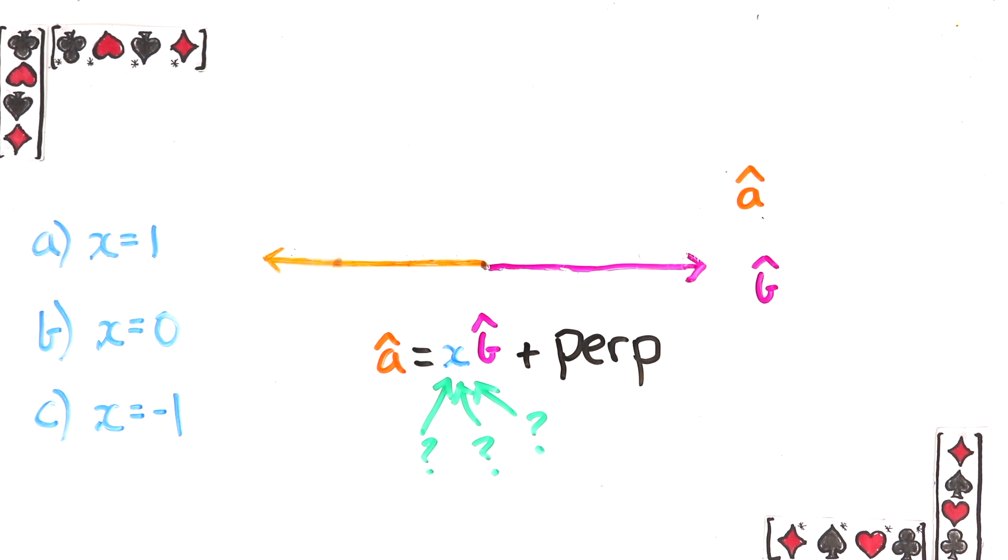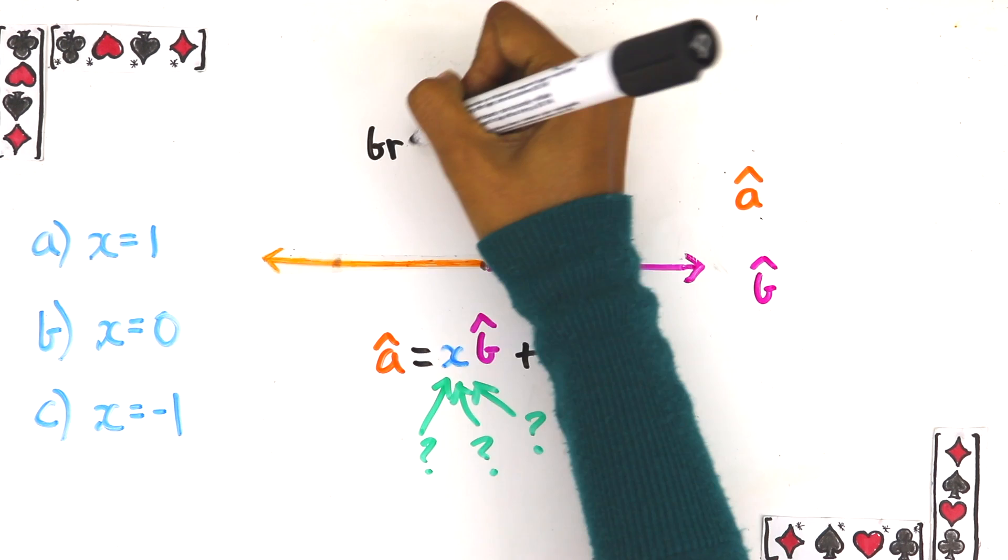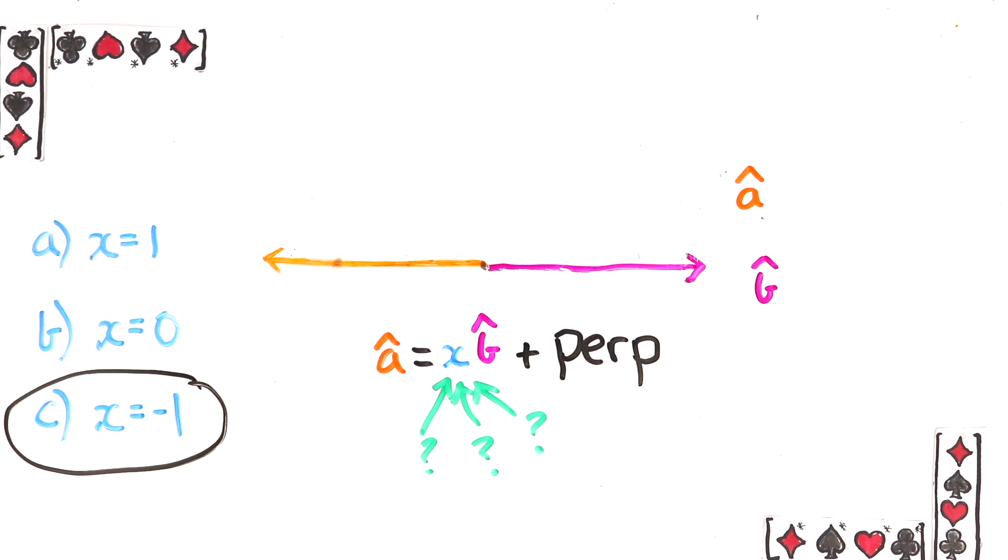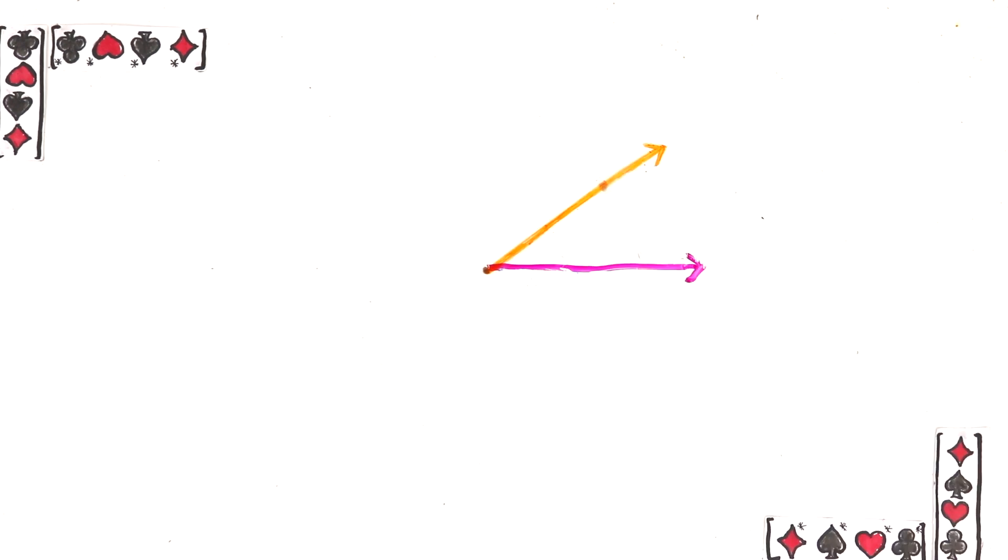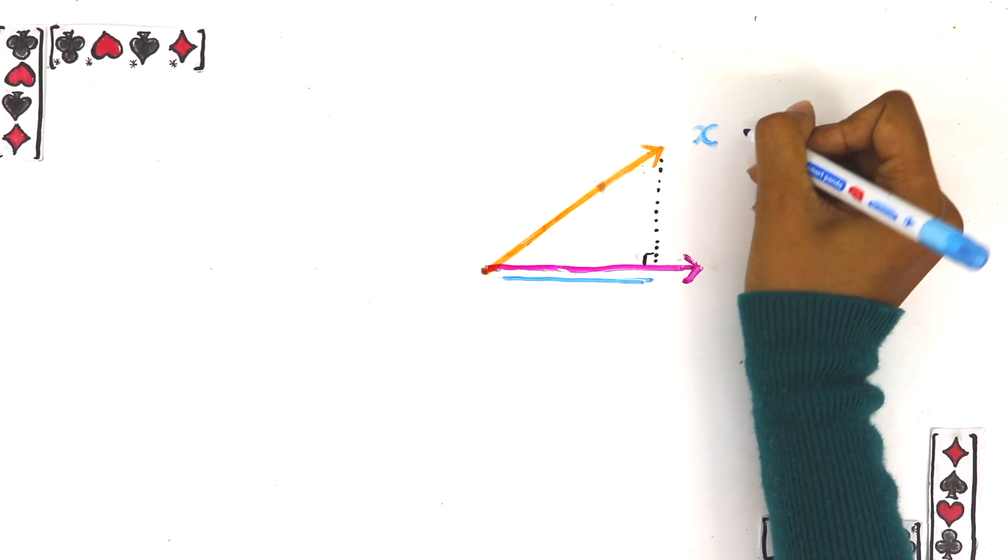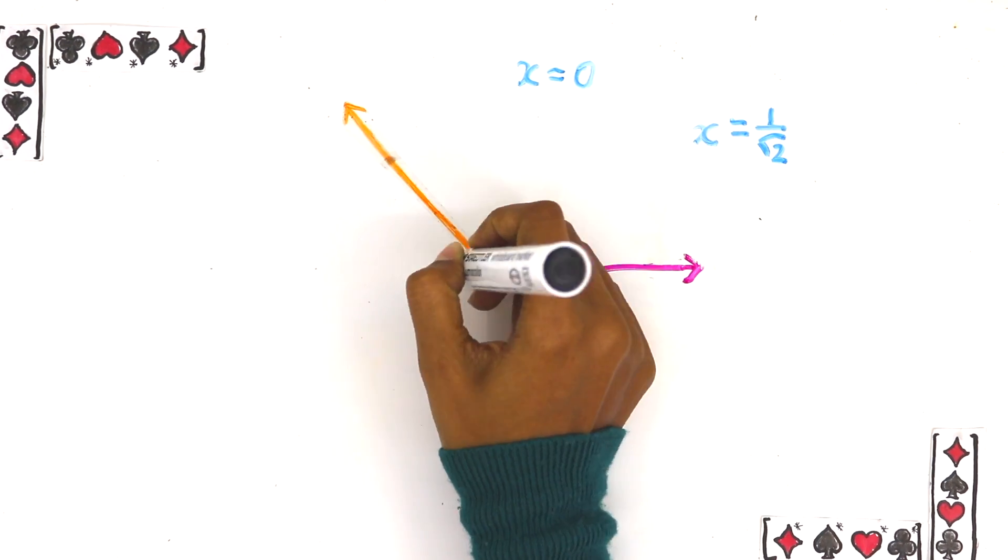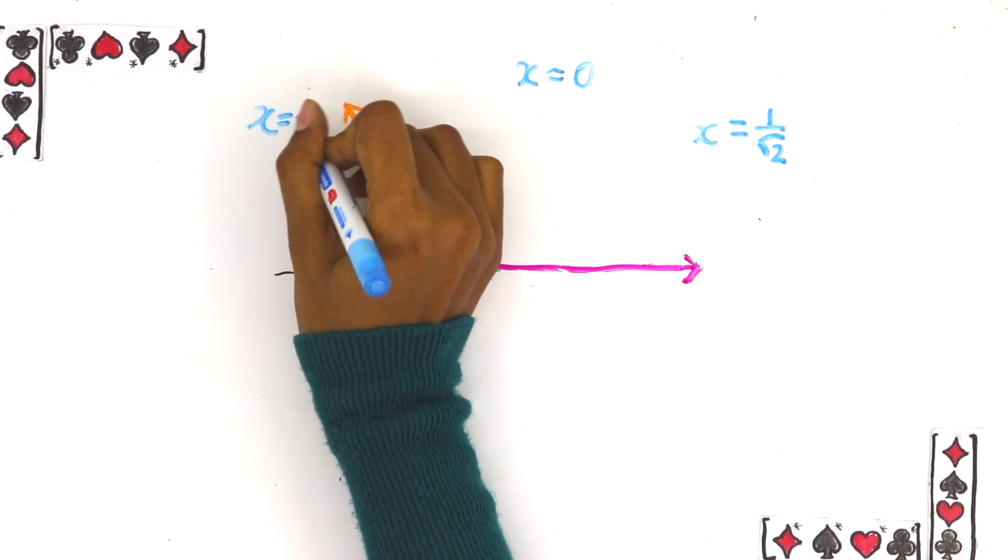Some of you might think that the answer to this is so obvious that there's no point actually doing it. But trust me putting the effort in to answer it in the poll will help this stuff stick in your mind. Hopefully you said the answer is minus 1 because a hat is now minus 1 times b hat. So great this number x seems to be a good answer to our question because the value of x decreases as a rotates away from b. And so it measures how much they were pointing in the same way.